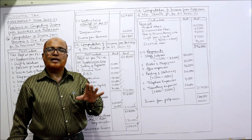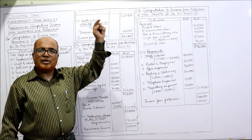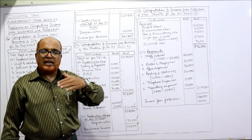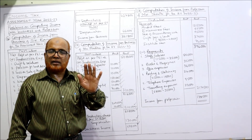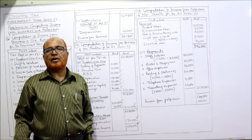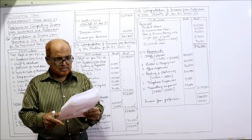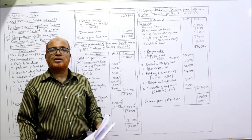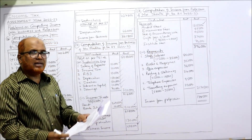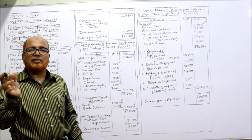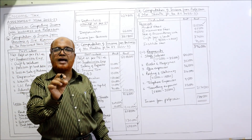To find income from profession, the receipts and payments account is given. We take revenue receipts of the profession and deduct revenue payments of the profession. Opening balance — not concerned with it. Audit fees: professional income — take 1,25,000. Dividend: taxable under income from other sources, not professional income — don't take. In working note write: dividend received is taxable under income from other sources. Examiner's fee: professional income — take 65,000.